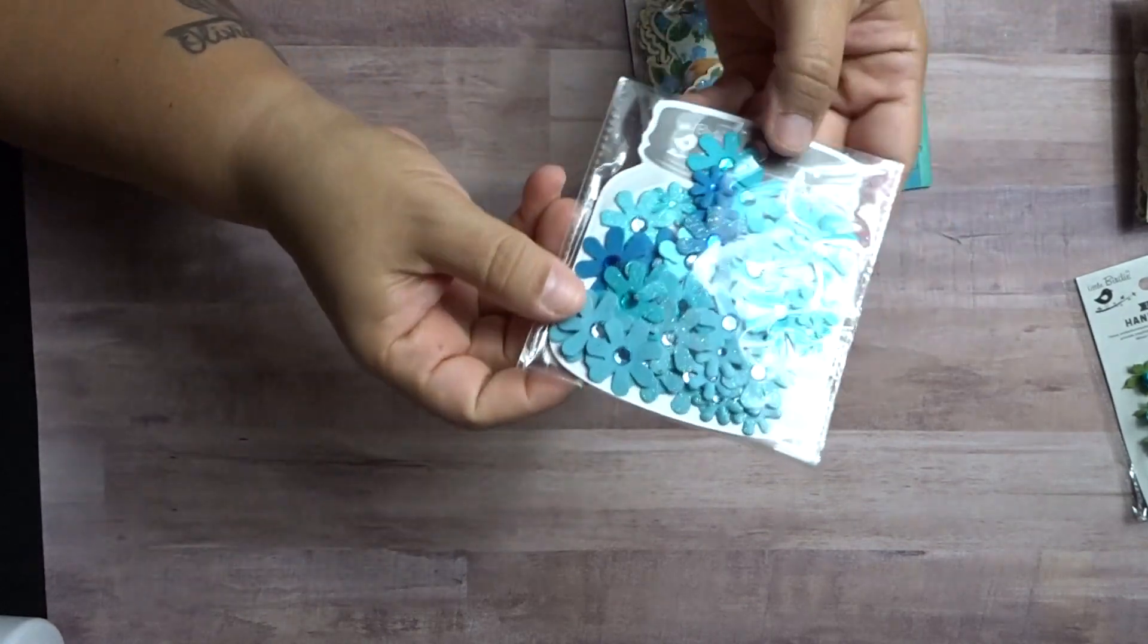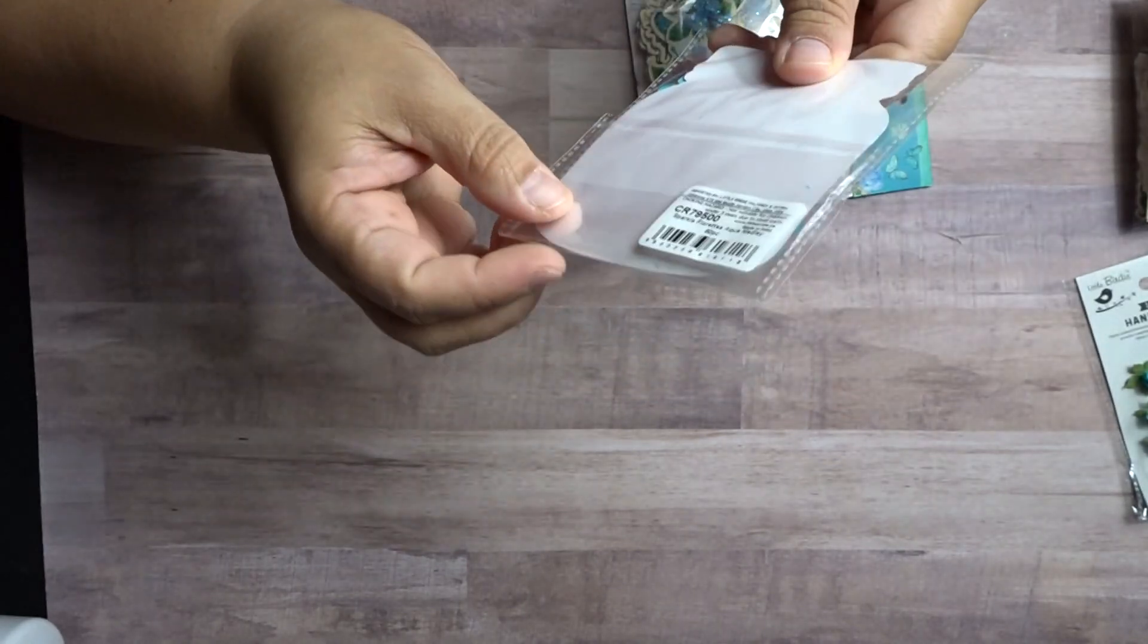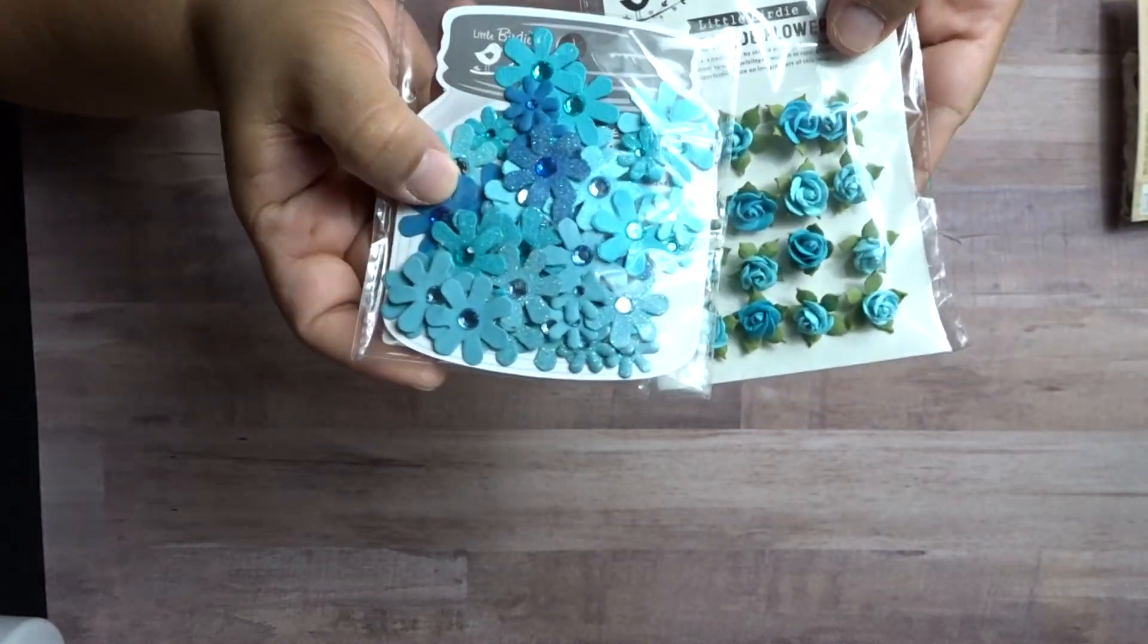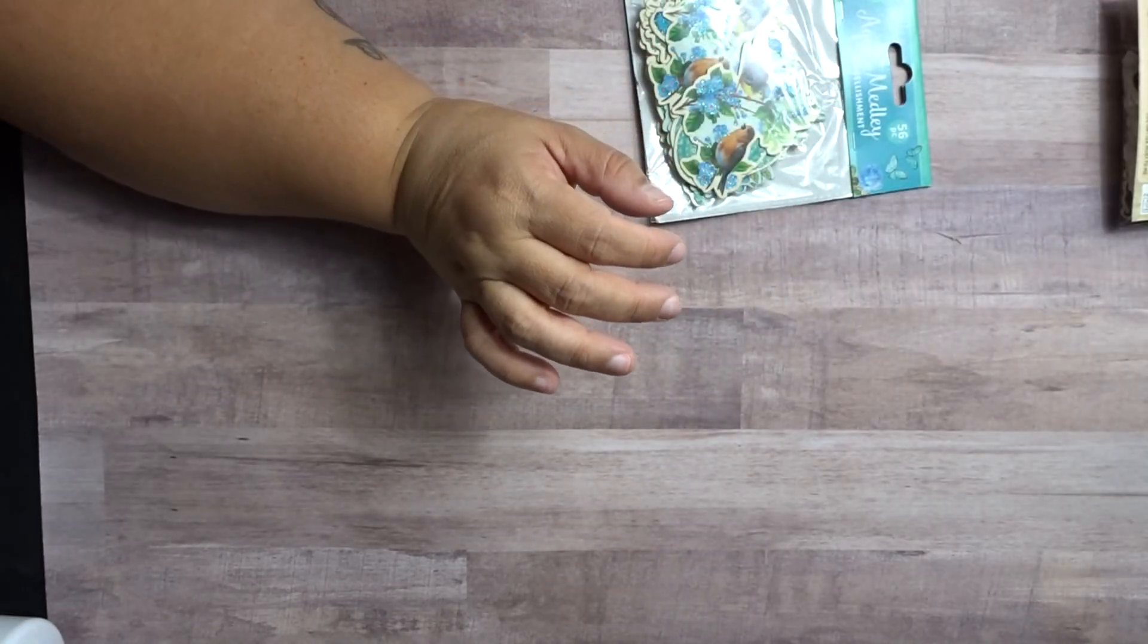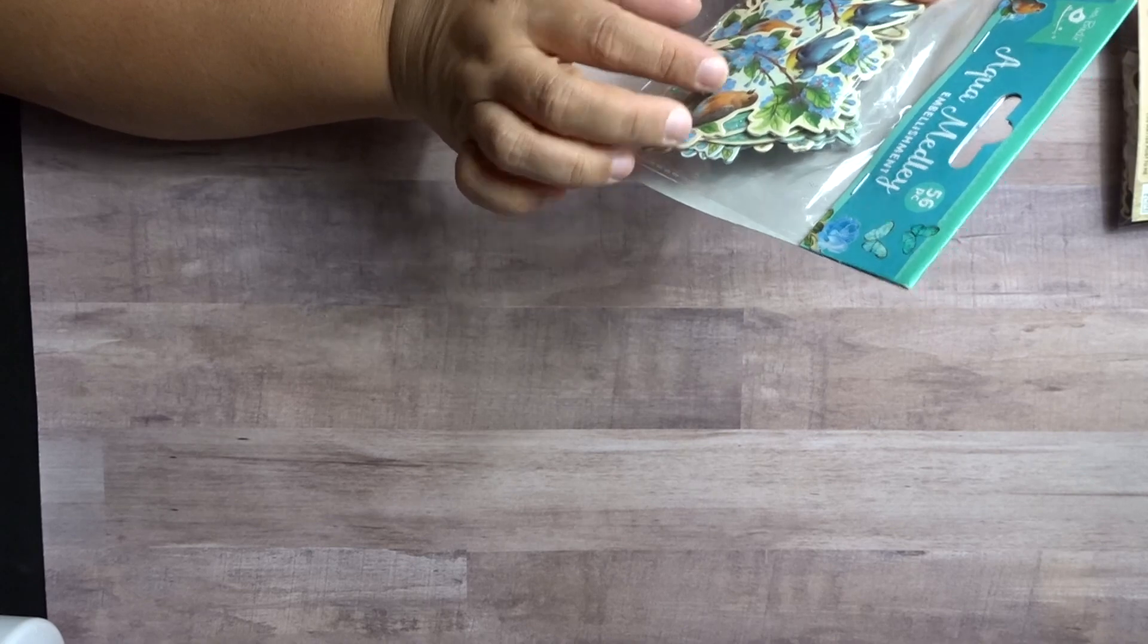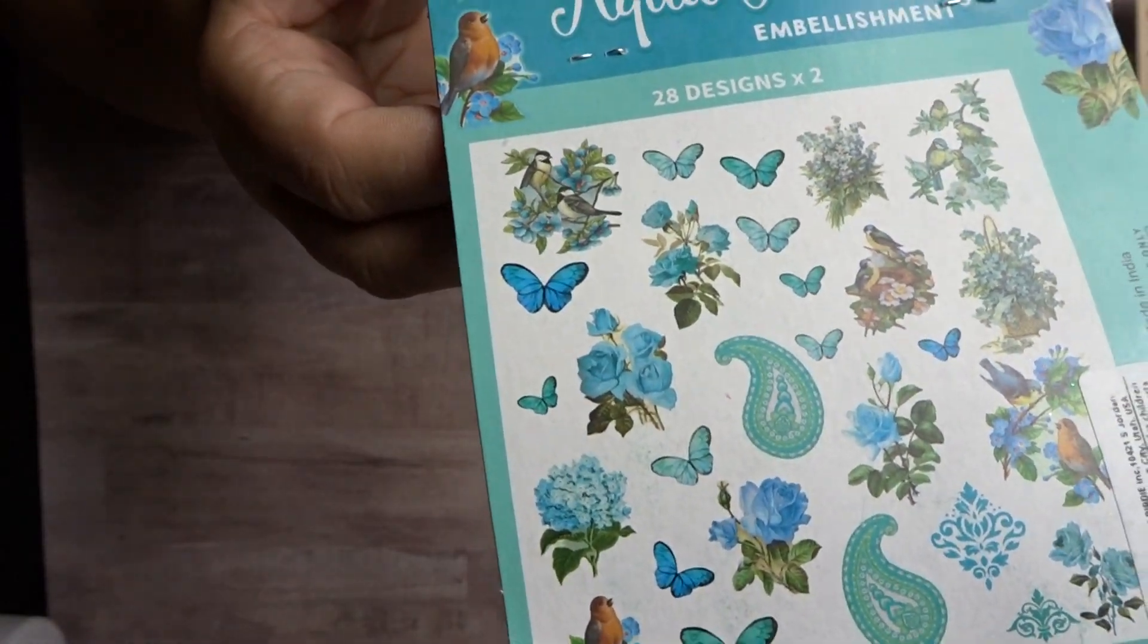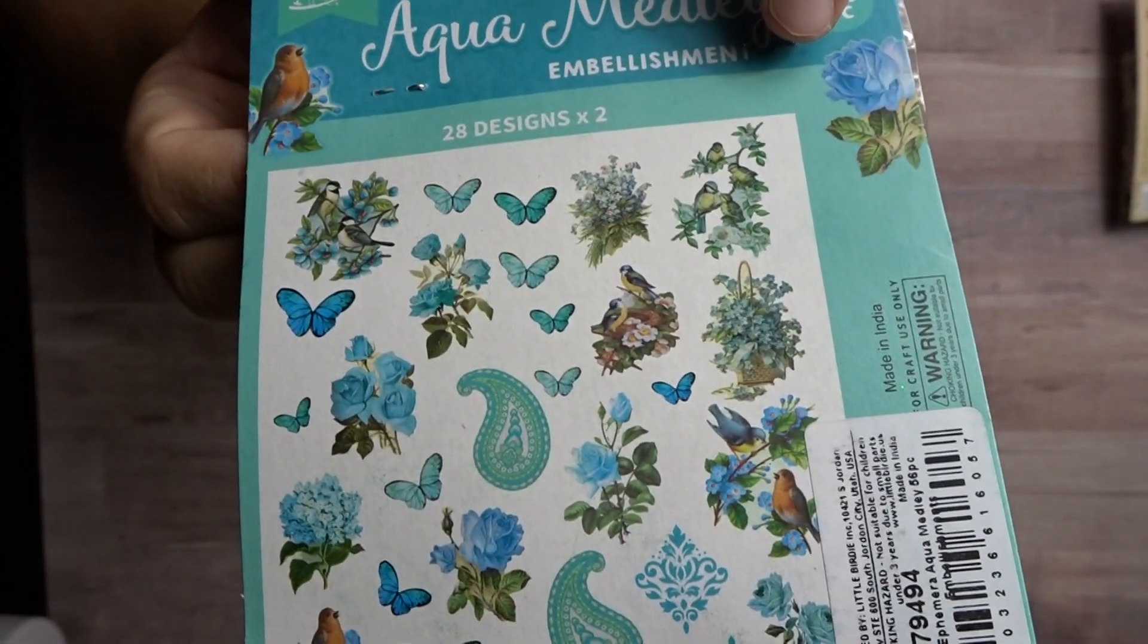And then, I got these flowers here. Flatback with some little flatback diamonds. But they, these are sparkle florets. Aqua Meli. Even though they match, you know, these flowers, they're a different paper line. And then, this is Aqua Meli. So, I'm guessing Aqua Meli has a bunch of little birds in it. But this one had butterflies, little birds, more butterflies, the paisley designs, more little birdies.